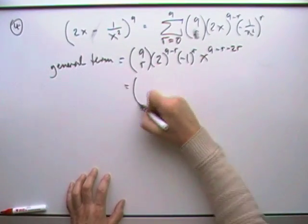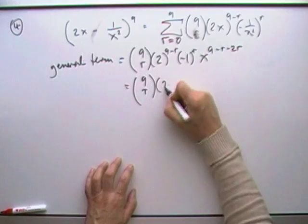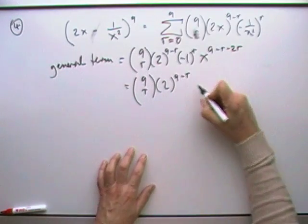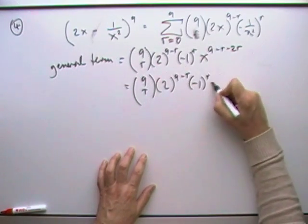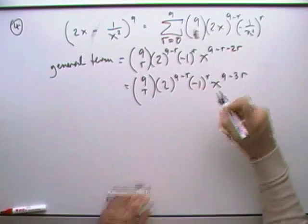I wish I hadn't done that now. 9 choose r, 2 to the 9 minus r, negative 1 to the r, x to the 9 minus 3r.